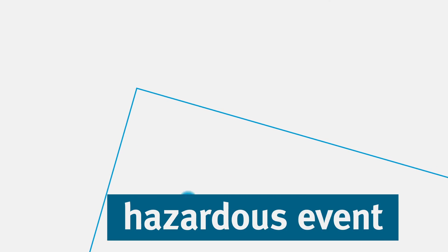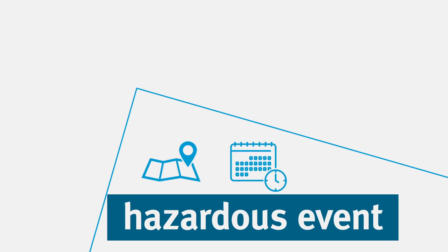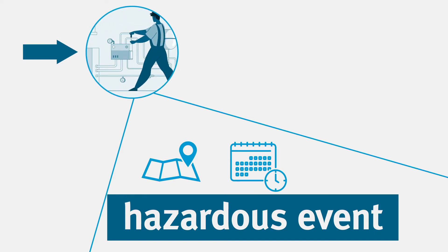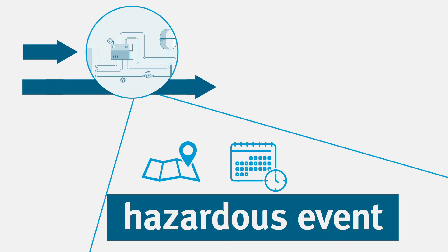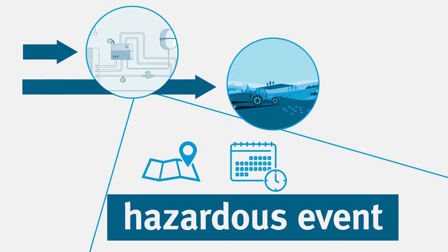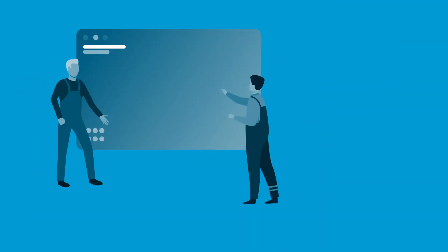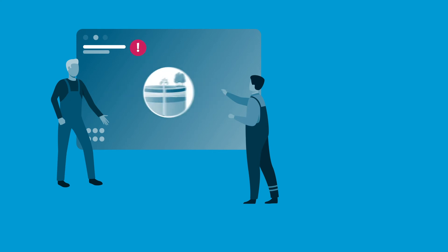Hazardous events can be spatially and temporally limited and have only short-term consequences, such as the failure of a technical system. But they can also have long-term consequences, such as intensive agriculture with high fertiliser input, or old water pipes made of lead.